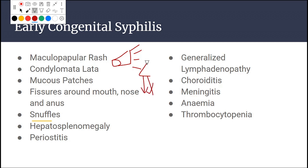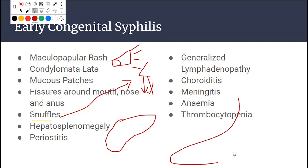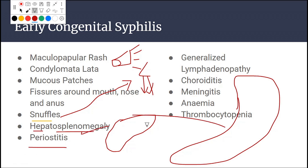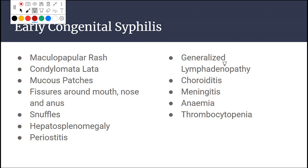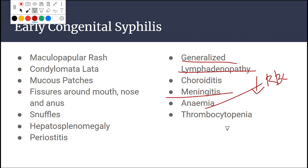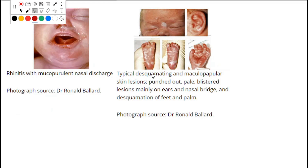There may be nasal discharge — called snuffles. Hepatosplenomegaly means the liver and spleen are enlarged. Periostitis is inflammation of the periosteum around bone. There may be generalized lymphadenopathy — inflammation of lymph nodes throughout the body. Other features include chorioretinitis (inflammation of retina and choroid), meningitis, anemia (decreased RBC or hemoglobin), and thrombocytopenia (decreased platelets).